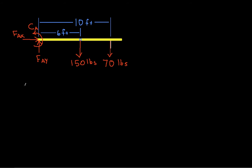We're assuming that this whole structure is in static equilibrium, which means that the sum of the forces in the x direction is equal to 0. In the x direction I have FAX, and that's the only force in the x direction. That's equal to 0, so we've already got a value: FAX is going to be 0.